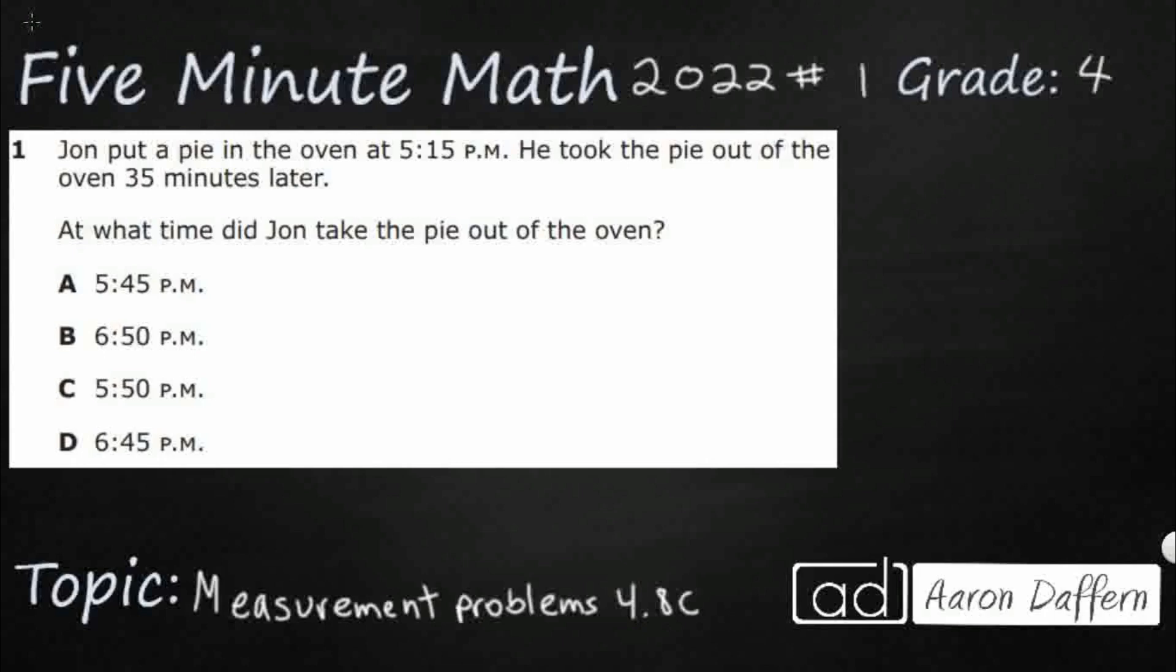So we are measuring time here, time intervals specifically, and there are going to be a few different ways we can solve this problem. John put a pie in the oven at 5:15. He took the pie out of the oven 35 minutes later. So we just need to figure out what is 35 minutes later.